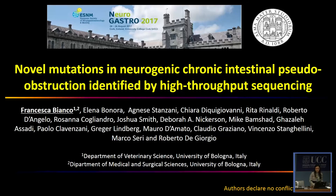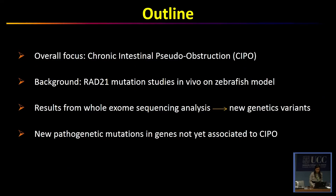I would like to thank the organization for giving me the opportunity to present our results. In this presentation, I will show you an overall focus on chronic intestinal pseudoobstruction with a brief background on RAD21 mutation studies in vivo and zebrafish model. In the results section, I will show you the results from whole-exon sequencing analysis with new genetic variants that we found in genes not yet associated to chronic intestinal pseudoobstruction.